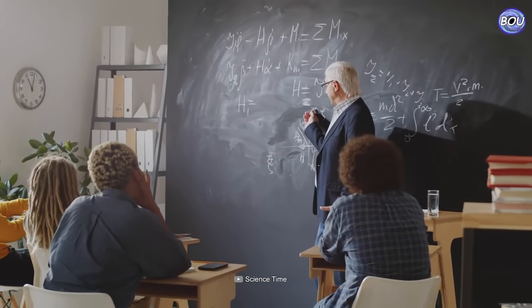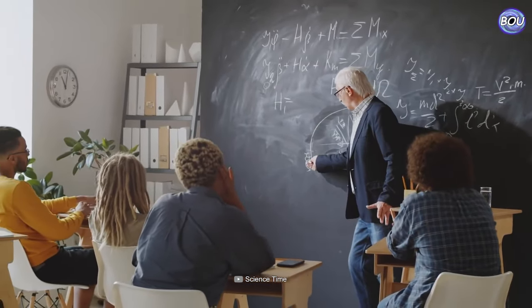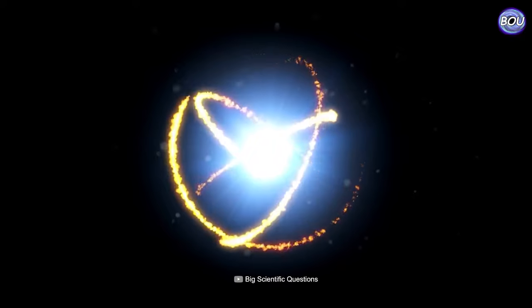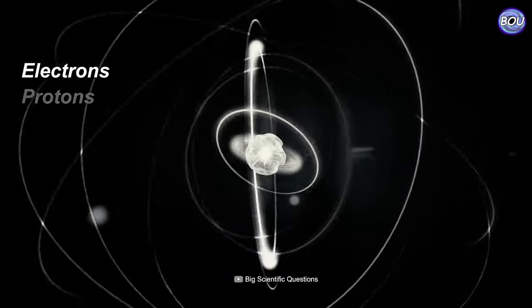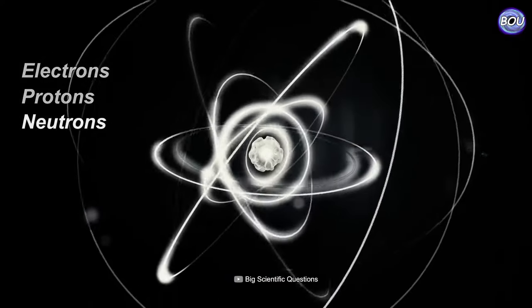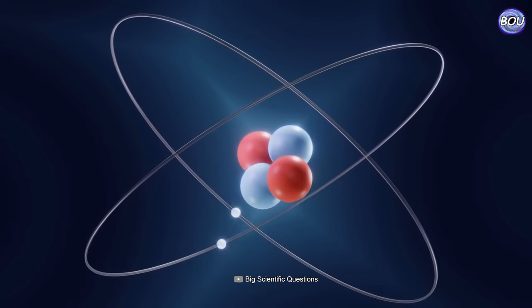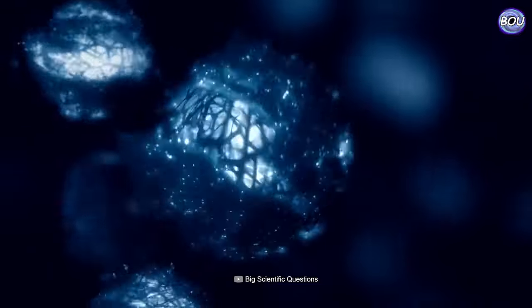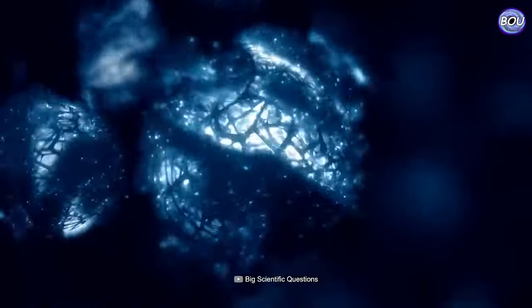Don't worry at all, I'll explain it to you very simply now. Generally, we all know that an atom is composed of three fundamental particles called electrons, protons and neutrons. Protons and neutrons are located in the nucleus of the atom, while electrons orbit around the nucleus in specific energy levels and orbitals.